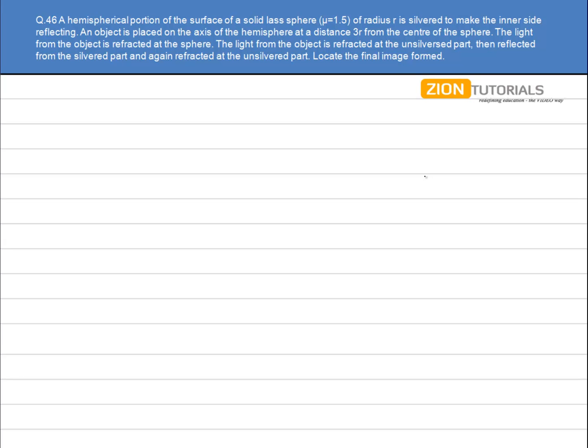The light from the object is reflected at the sphere. The light from the object is reflected at the unsilvered part, then reflected from the silvered part and again reflected at the unsilvered part. Locate the final image.